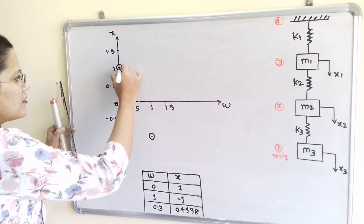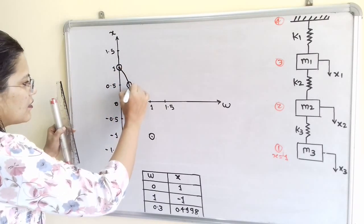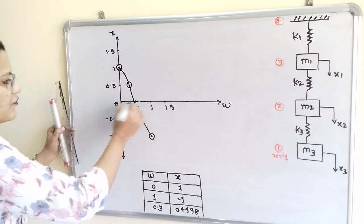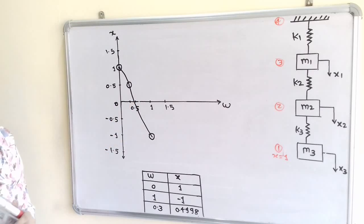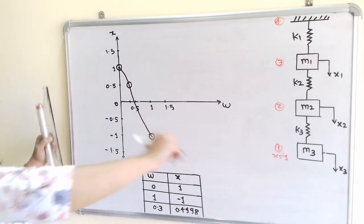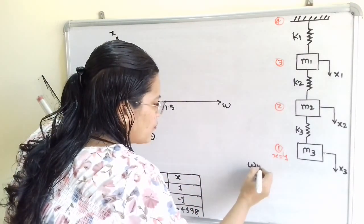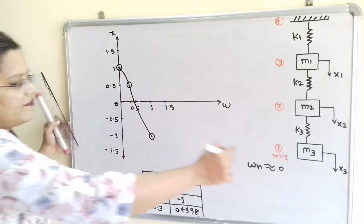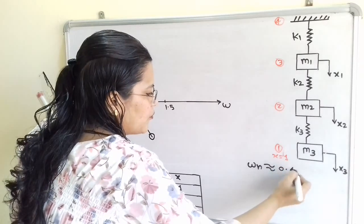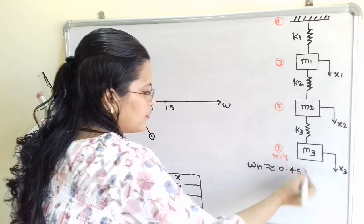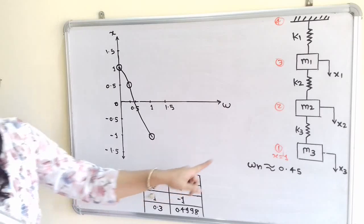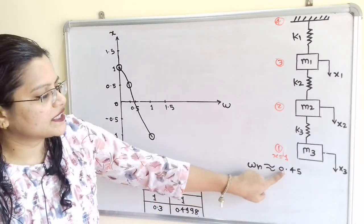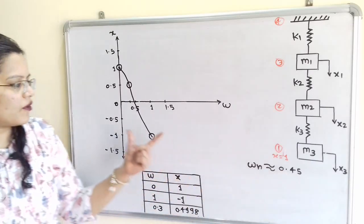From the graph, the curve intersects zero at approximately 0.4 to 0.45. Therefore, the first non-zero natural frequency omega_n is approximately equal to 0.45, as read from the graph.